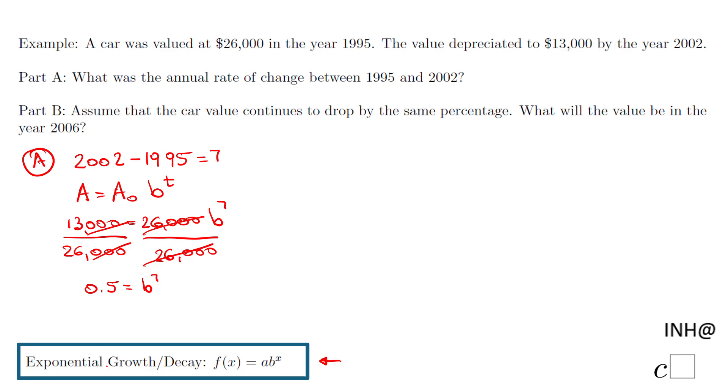So how do we find b here? We need to take what is called the seventh root to cancel the power of seven. Or simply on your calculator, the easiest way in my opinion is to do 0.5 to the power of one over seven. I end up with 0.90572.